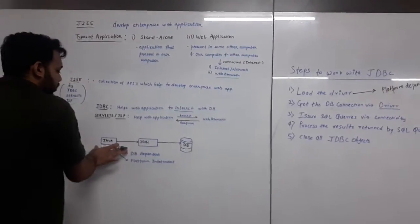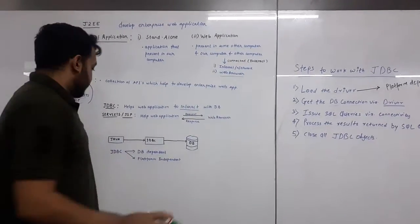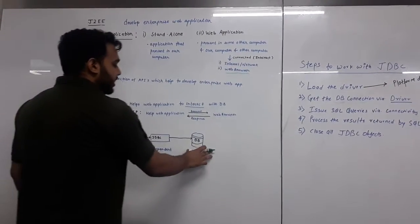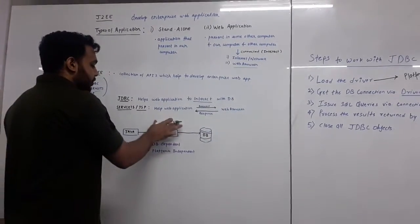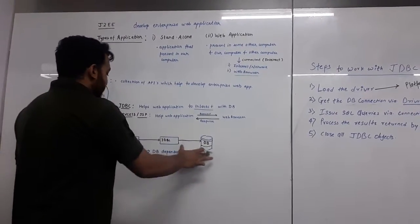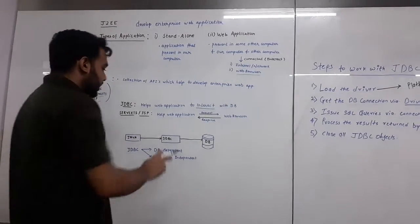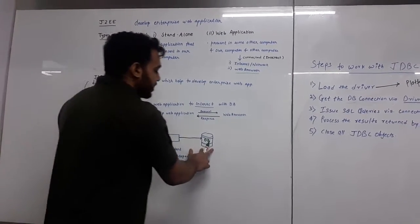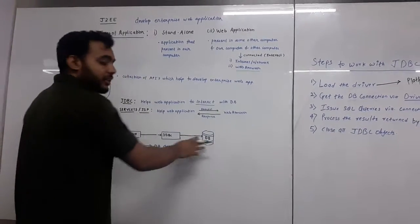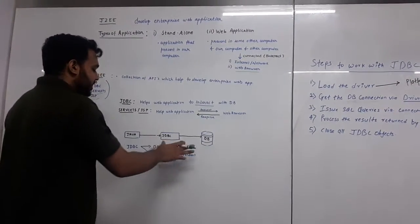How are Java and database connected? Java is connected to database through JDBC. JDBC is the main path through which database and Java are connected. Java language cannot be understood by the database, and database language, that is SQL, cannot be understood by Java.